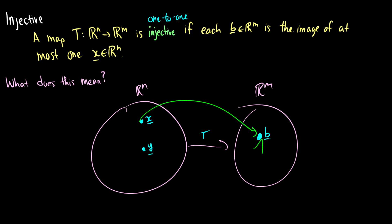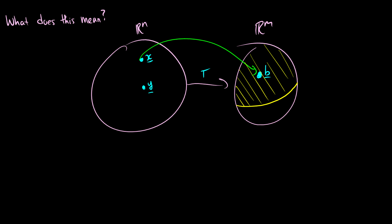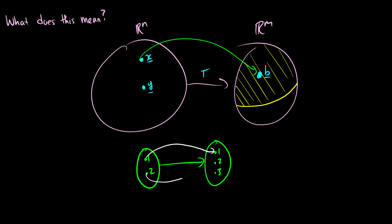Does all of Rᵐ have to be covered for injectivity? The answer is no — you could have just a section of Rᵐ being covered. For example, with the set {1, 2} mapping into {1, 2, 3}, if we map every number to itself — one goes to one, two goes to two — this is injective because one goes to one and two goes to something unique. But three isn't mapped, so it's not surjective, but it is injective.